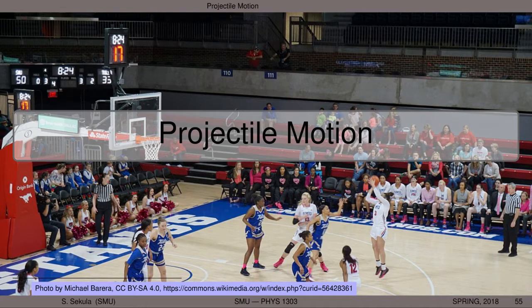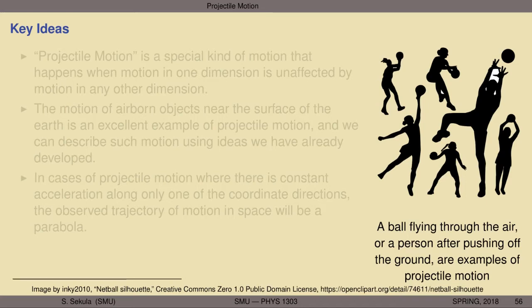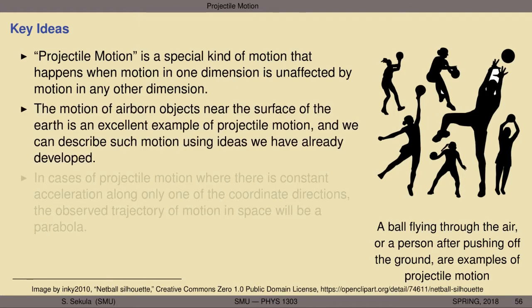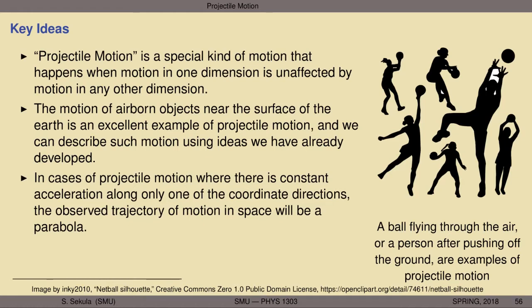Let's begin to look more deeply at projectile motion and build a toolkit based on our previous explorations of motion in more than one dimension to describe this motion. First, projectile motion is a special kind of motion that happens when motion in one dimension is unaffected by motion in any other dimension. The motion of airborne objects near the surface of the Earth is an excellent example. In cases of projectile motion where there is constant acceleration along only one coordinate direction, the observed trajectory in space will be a parabola.